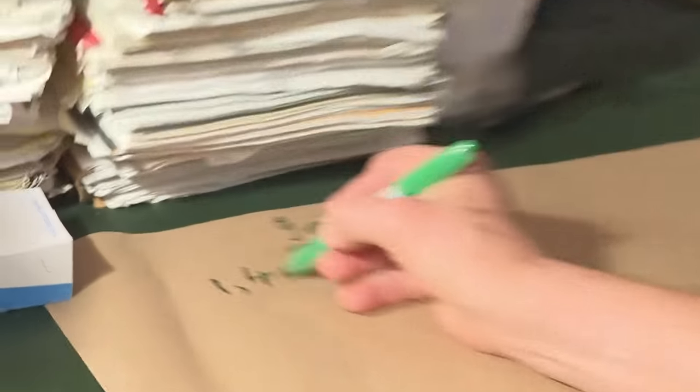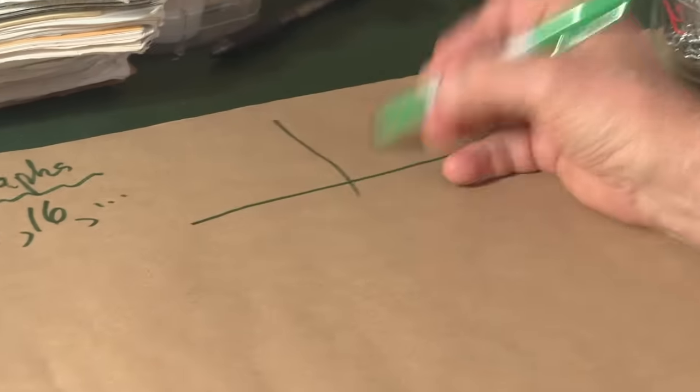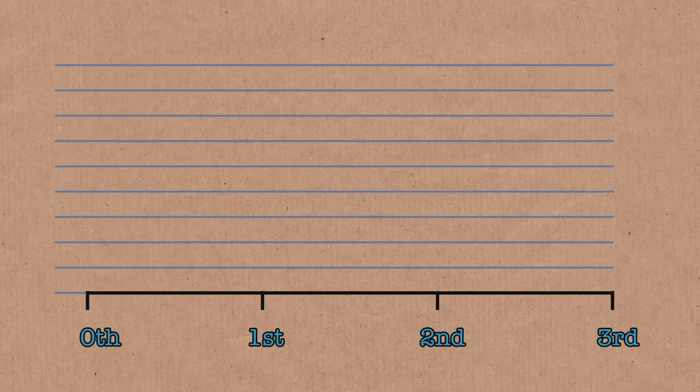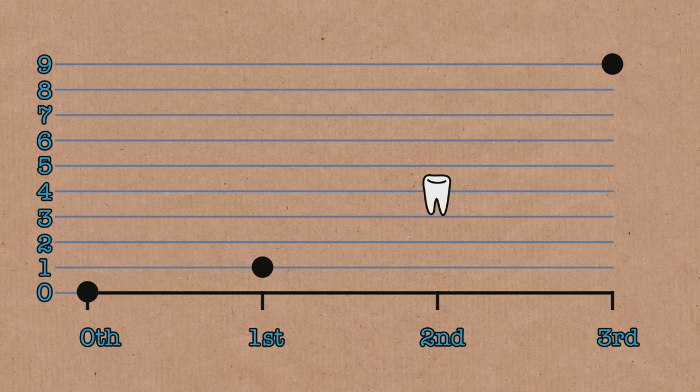Now if you look at something like the squares, the squares go 1, 4, 9, 16, blah blah blah. If you make a graph of them, this is a discrete sequence. They're separate numbers and I may as well start at 0. So 0, the 0th term is 0, the 1st term is 1, the 2nd term is 4, the 3rd term is 9, and so on.